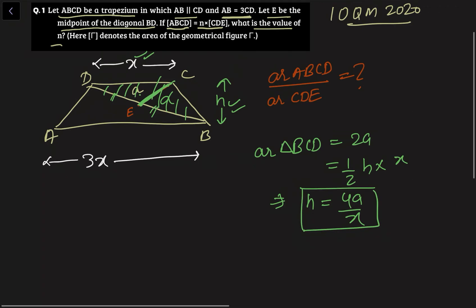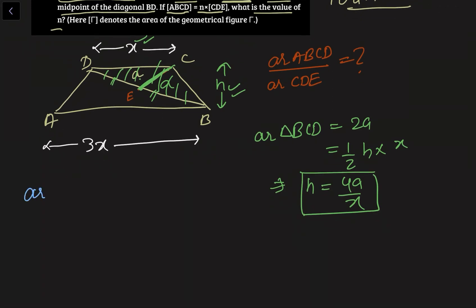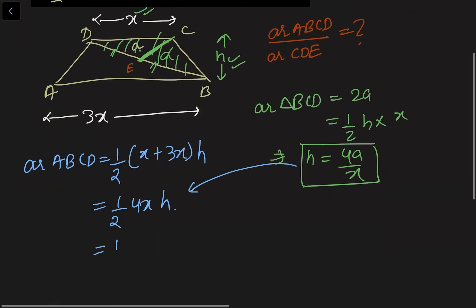Now let's come to this whole trapezium. We know that area of trapezium ABCD is half into sum of opposite parallel sides, that is X plus 3X into height, which comes out to be half into 4X into H. Now put this value of H here. What I am getting is half into 4X into 4A by X. This X got cancelled, this 2 got cancelled. So I am getting 8A.